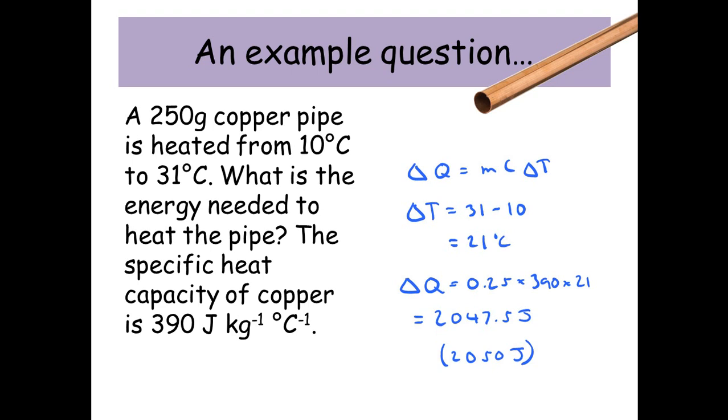Putting that all together in our equation and hitting equals on the calculator, we get an energy of 2,047.5 joules. Since my readings are to two significant figures, and we'll allow two or three significant figures, the final value is 2,050 joules.